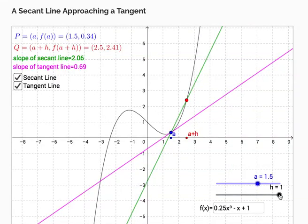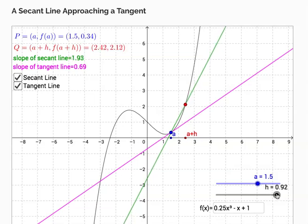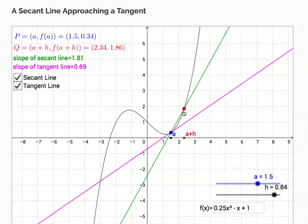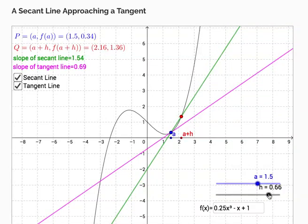Now the slope of that secant line is 1.86 and the slope of the tangent is 0.69, so at least it's getting closer. As I pick another point closer again, the slope of that secant line is getting closer and closer to the slope of the tangent line.